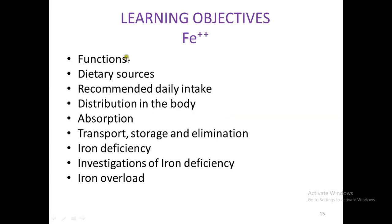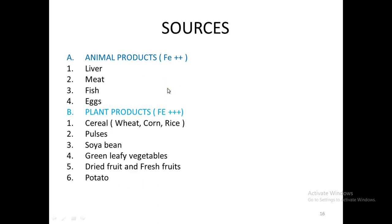Iron is a trace element, meaning it is required in the diet in very small amounts, but it is very essential for the functioning of the human body. Our learning objectives for today's lecture are: the functions of iron in the body, dietary sources of iron, how much iron we should consume every day, where iron is found in the body, how iron is absorbed from the GIT, how it is transported, stored, and eliminated, causes of iron deficiency, investigations, symptoms, and finally iron overload.